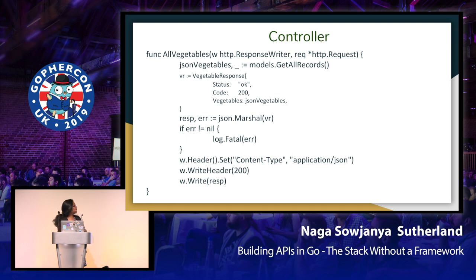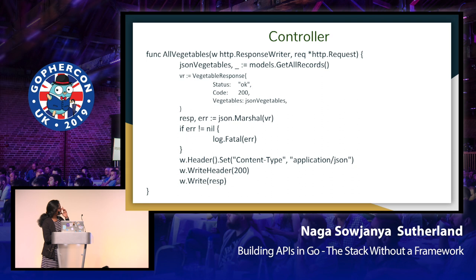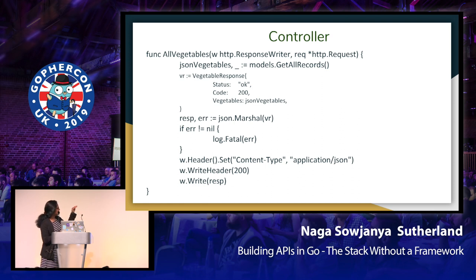This is a code snippet from the controller. As you can see, it's a basic Go function. All it does is get the data from the model, JSON marshal it, and write the response. I've hardcoded some values and removed error checks so it all fits in one slide, but it's a lot better in the GitHub repository.